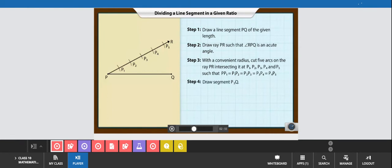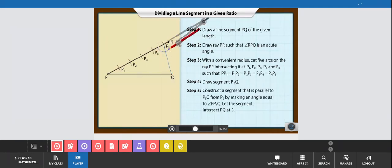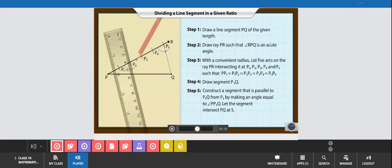Draw segment P5Q. With the help of a compass, construct a segment that is parallel to P5Q from P2 by making an angle equal to angle PP5Q. Let this segment intersect PQ at S.